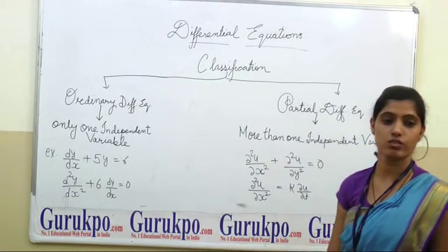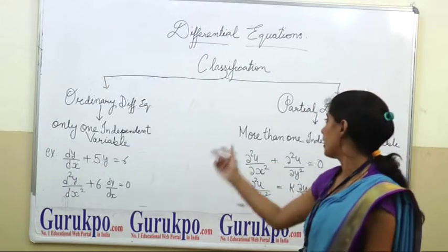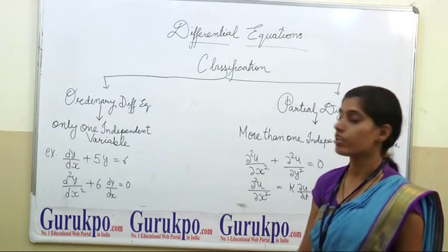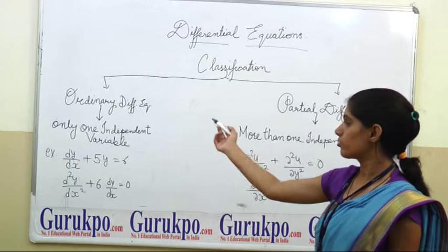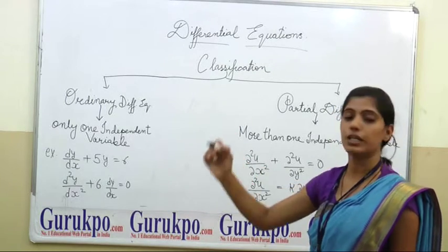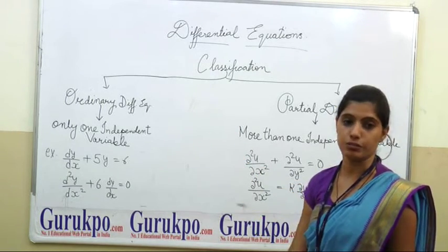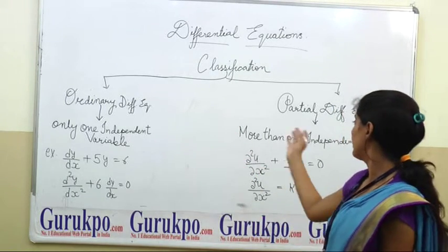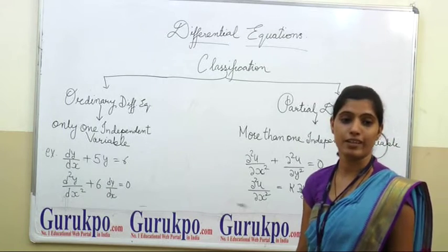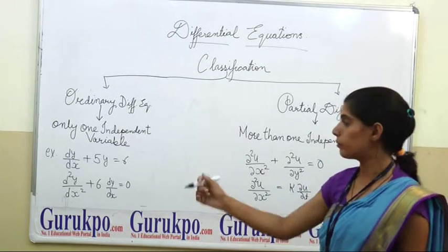Ordinary differential equation and partial differential equation. In an ordinary differential equation there is only one independent variable, while in a partial differential equation there is more than one independent variable.